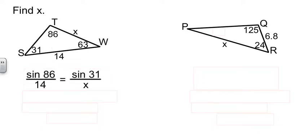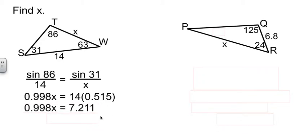Sine of 86 over 14, those two go together. Sine of 31 over x, those two go together. Well, do a little cross multiplying. And I went ahead and punched in those values as I went, mostly in the interest of time. Do a little arithmetic and divide and we find out the missing side, or the side we want, is 7.225.